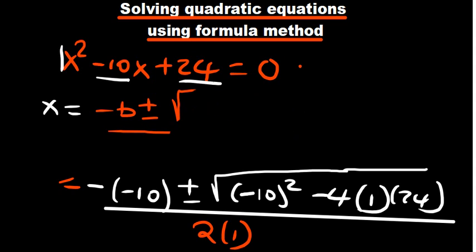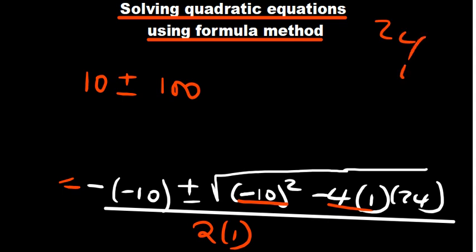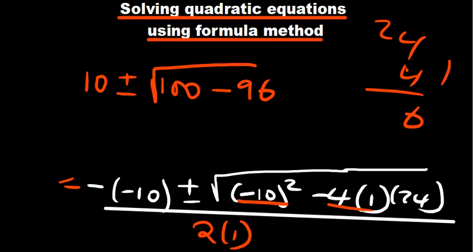From there now, we can just begin simplifying what we have. So if you look at the left hand side, what basically do we have? So negative 10 is going to become 10 because negative by negative is positive. Plus or minus. Negative 10 squared is 100. So I have 100. 4 by 24. 24 by 4, that is 96. Minus 96. Divided by 2.